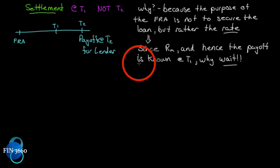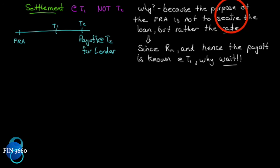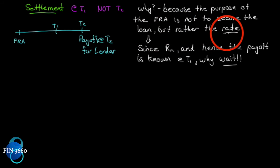Since they're only lending the spread, one party will earn and one party will lose. Most contracts settle on or near the expiration date, but for the forward rate agreement, settlement is at t1 — the beginning of the period — not t2. Why? Because the purpose of the FRA is not to secure the loan, but rather to secure the rate.